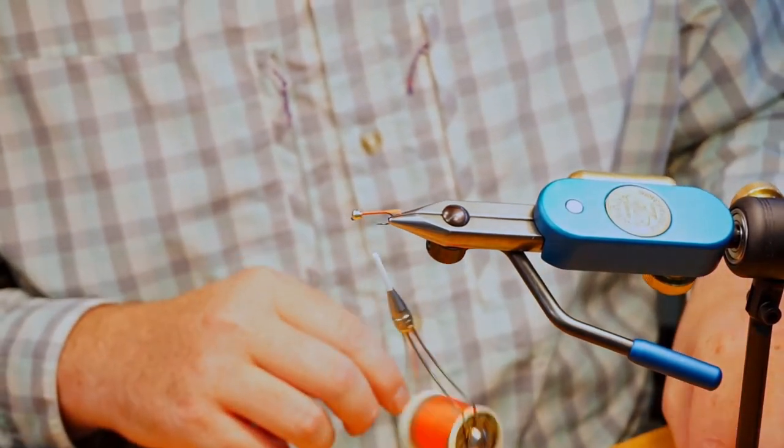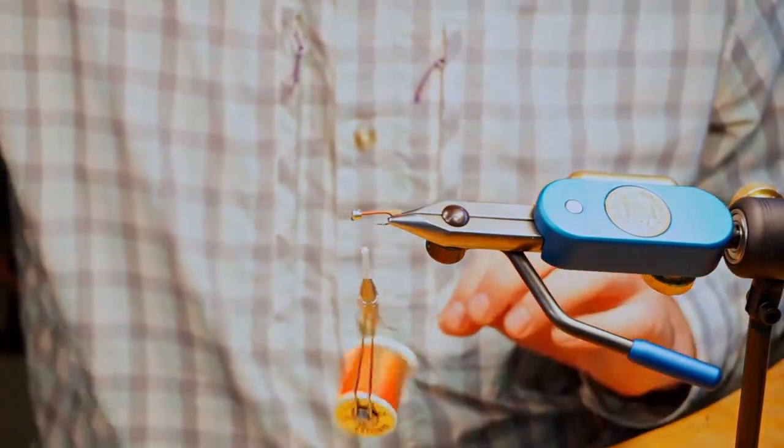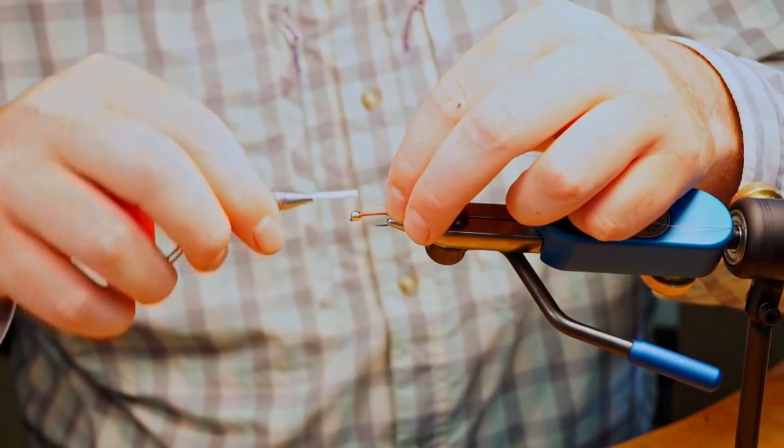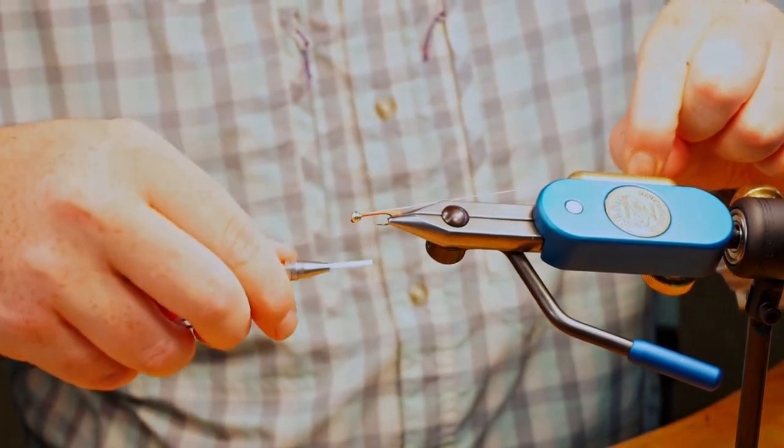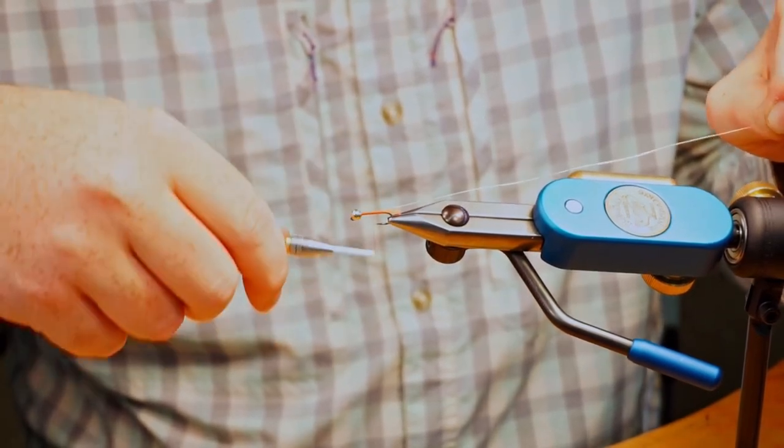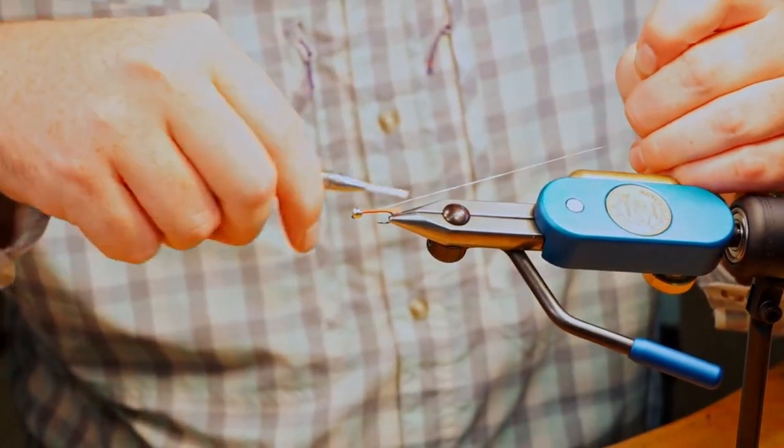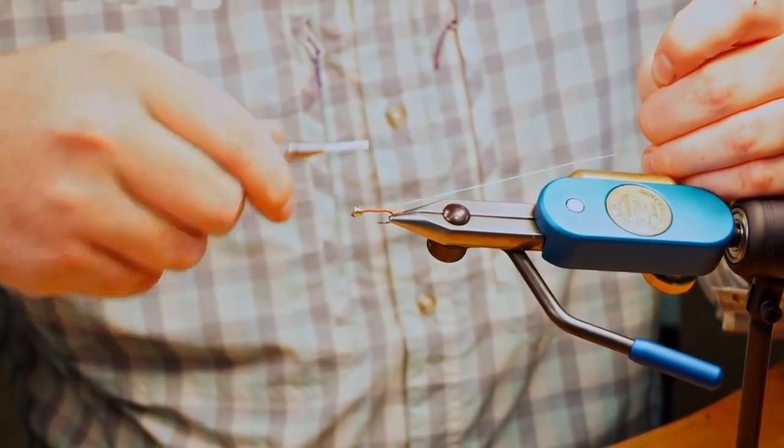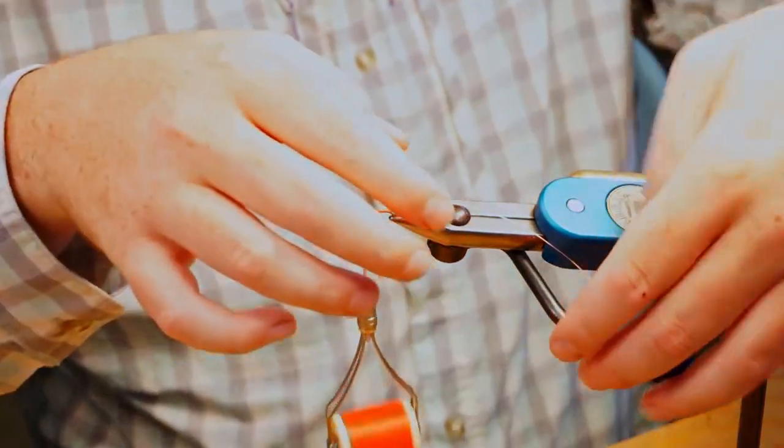So now I'm just going to tie in my rib here, which is just brassy copper wire. Alex, can you do me a favor? Can you give me some 1 100th micro flashaboo? Because I forgot that. So I'm going to just tie in this copper wire here from my rib. I'm just going to go back up, since I forgot that that's a component to this fly that I like to include. We'll wait for Alex.